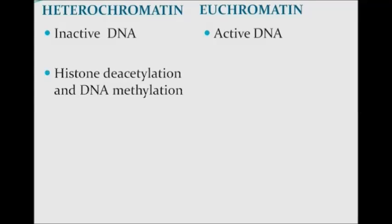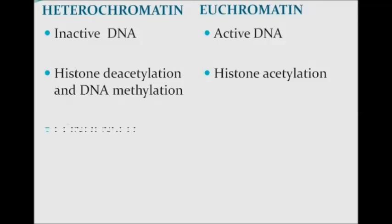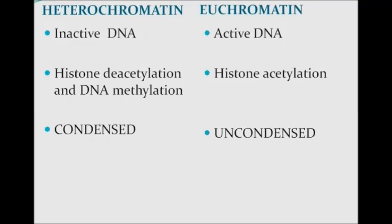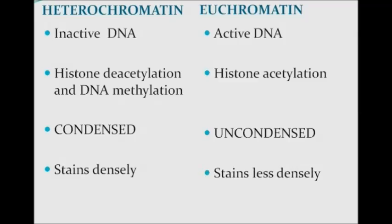Heterochromatin is formed by histone deacetylation and DNA methylation, whereas euchromatin is formed by histone acetylation. In other words, histone acetylation activates the DNA and histone deacetylation inactivates the DNA. As seen in the picture, heterochromatin is condensed and stains deeply, while euchromatin is uncondensed and stains less deeply.